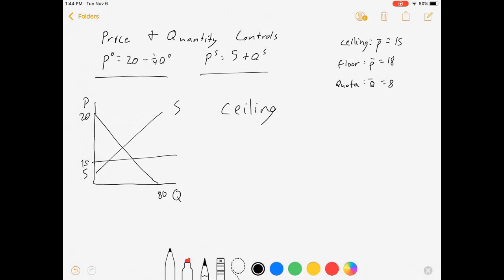Shortage or surplus, let's look at quantity demanded. Let's look at our inverse demand curve. Price is 15 equals 20 minus 1/4 QD. So that's 1/4 QD equals 5. QD equals 20. Same thing for supply. Quantity supplied: 15 equals 5 plus QS. QS equals 10.